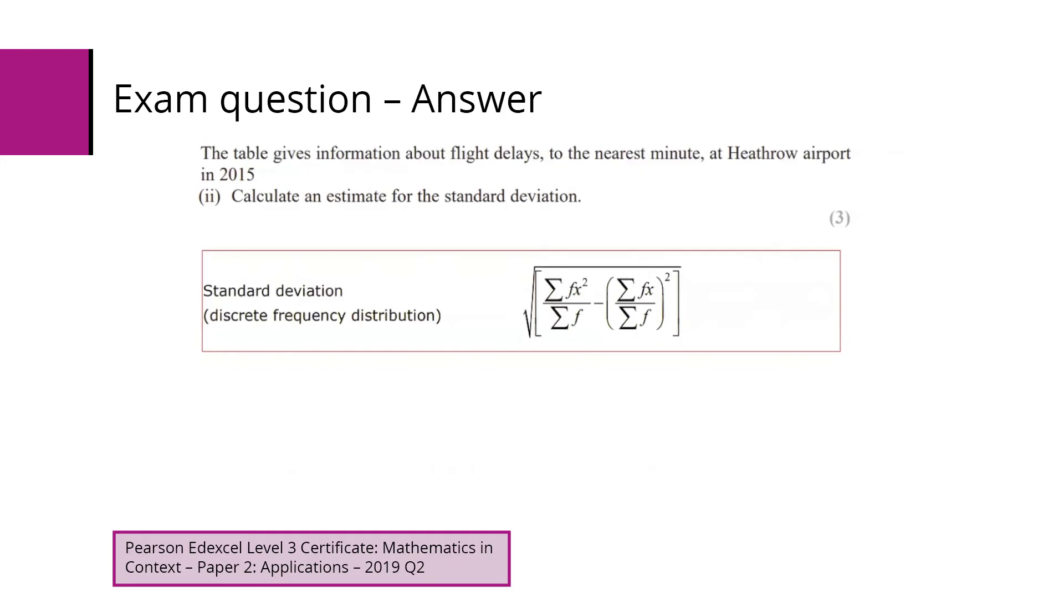This value here is the value squared multiplied by the frequency added up, this is the total number of flights, and then this is the value we found partway through workings in the first part. Substitute them in and it gives you 28.57.